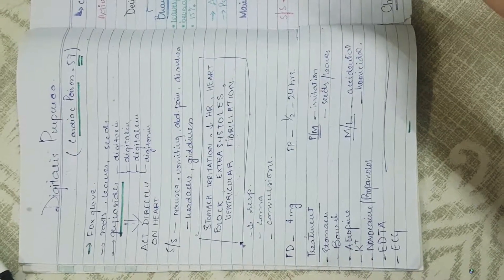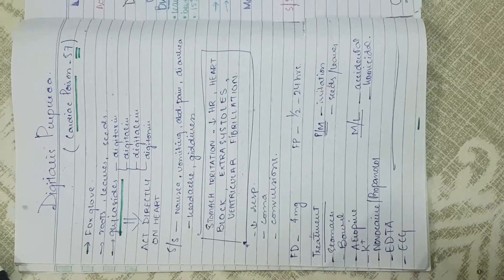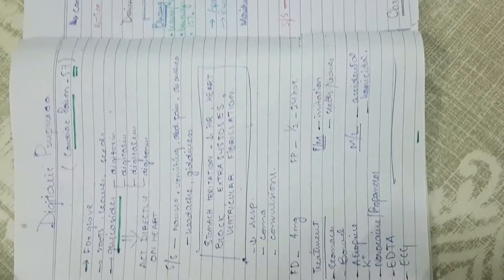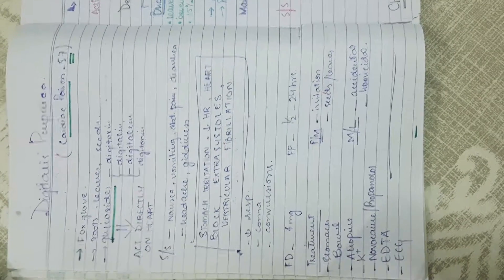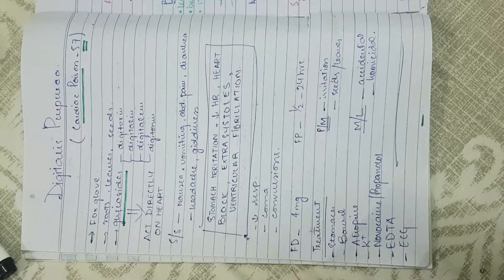Assalamu alaykum. Today's topic is digitalis poisoning, also known as digitalis purpura, digitoxin, or digitalin. It is a cardiac poisoning written in chapter 57 of Parekh and is collected from a plant known as foxglove.